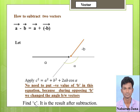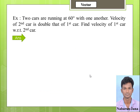Now we can find c, which is the resultant after subtraction — it gives the result of the vector subtraction. Example: Two cars are running at 60 degrees with one another. The velocity of the second car is double that of the first car. Find the velocity of the first car with respect to the second car.